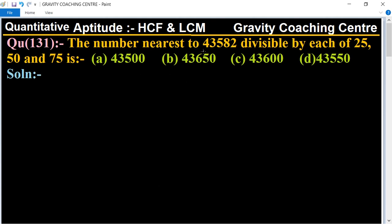So in this question, which is the nearest number to 43582 that is divisible by 25, 50, and 75?